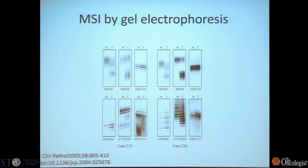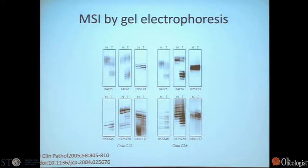This is what MSI looks like on a gel. You see a set of these microsatellites. When run out on a gel, in the tumor they are duplicated, and you can see several examples of that here.